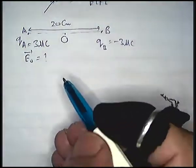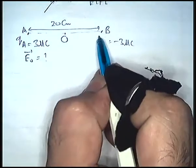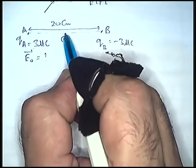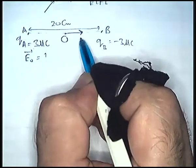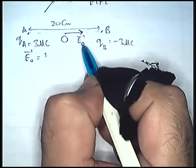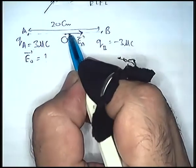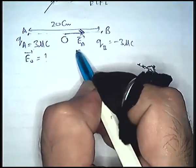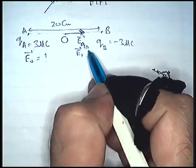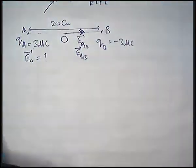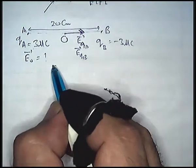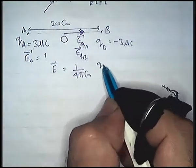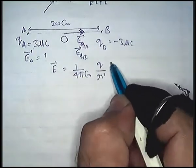We need to find the electric field at O. There are two electric fields at O: one field due to charge QA and the other field due to charge QB. The electric field due to a positive charge is directed away from the positive charge — this is the EA vector. The electric field due to a point charge is given by 1 by 4 pi epsilon naught times Q by R squared R-hat.